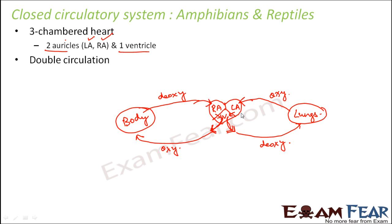Blood flows from the auricles to the ventricle due to high blood pressure. While mixing of oxygenated and deoxygenated blood is prevented in the separate right and left auricles, mixing does occur in the single ventricle — because the ventricle is not divided into separate chambers. Oxygenated blood from the left auricle and deoxygenated blood from the right auricle both enter the same ventricle.